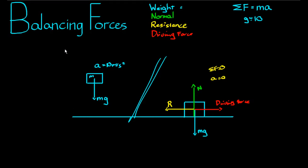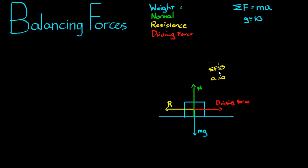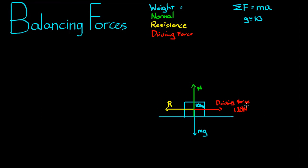Let's look at a question with real values. We have an object of mass 10 kilograms sitting on a surface, being pushed with a driving force of 120 newtons, but it is not accelerating. Let's find the magnitude of each of the three unknown forces.